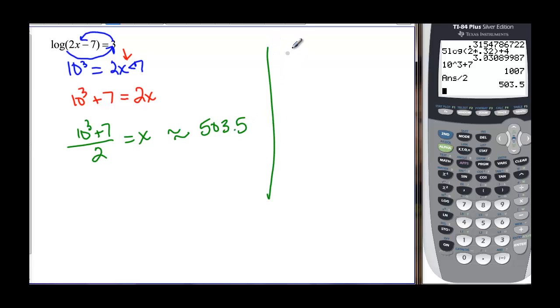Again to check it, if I really needed to check it, I could ask for the log of two times 503.5 minus seven, equal to three. So log of two times 503.5, and then minus seven, to multiply and then subtract seven, and I get a three.